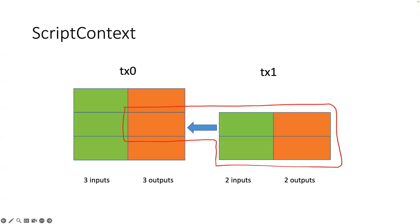Welcome everyone to another week where we can learn sCrypt smart contract programming together. This week I'm going to talk about something you can think of as an advanced topic: so-called sighash flags. Let's break it up into several steps so people can understand it fully. Before I dive into that, the most closely related concept is called script context. Who can tell me what a script context is in a smart contract?